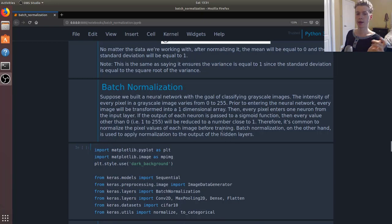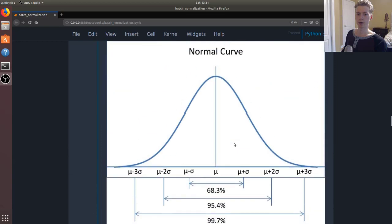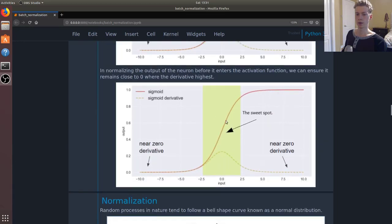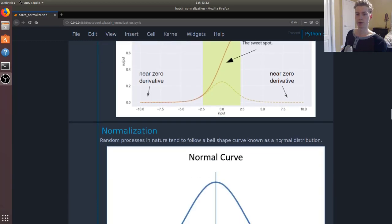Essentially, if that ends up going through a sigmoid function, then all the values other than zero, like 255 and so on, would have a derivative of zero or near zero.